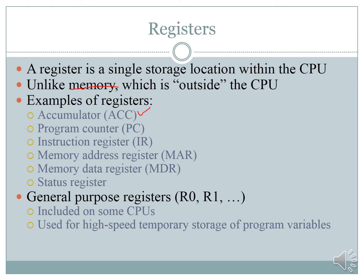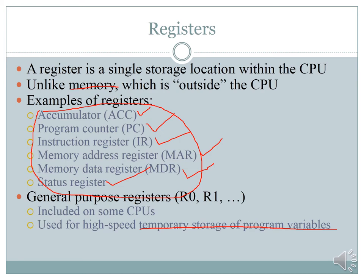Examples of registers include: the Accumulator, which keeps intermediate data when programs are executing; the Program Counter, which gives the address of the next instruction; the Instruction Register, which keeps the instruction currently being executed; the Memory Address Register and Memory Data Register, used for locating instructions in memory; the Status Register, which tells the CPU whether the address is being written or read; and General Purpose Registers, which provide additional temporary storage.